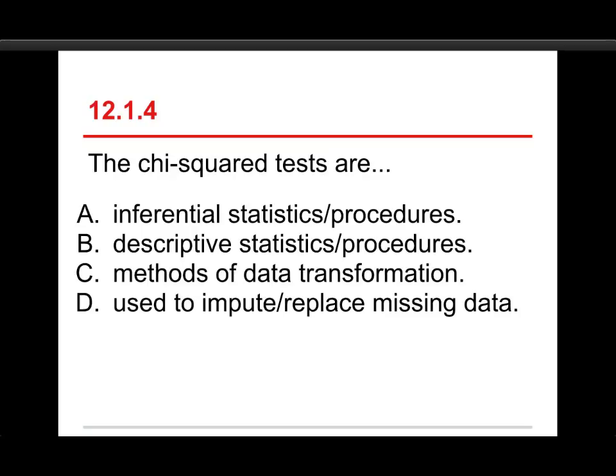Alright, number four. The chi-squared tests are A. inferential statistics and procedures, or B. descriptive statistics and procedures, or C. methods of data transformation, or D. used to impute or replace missing data.